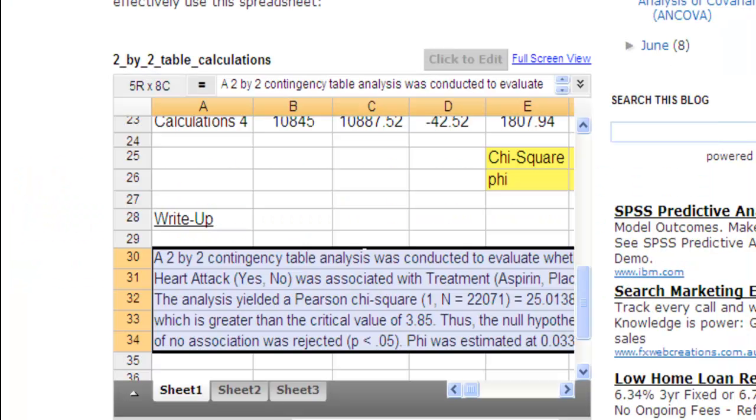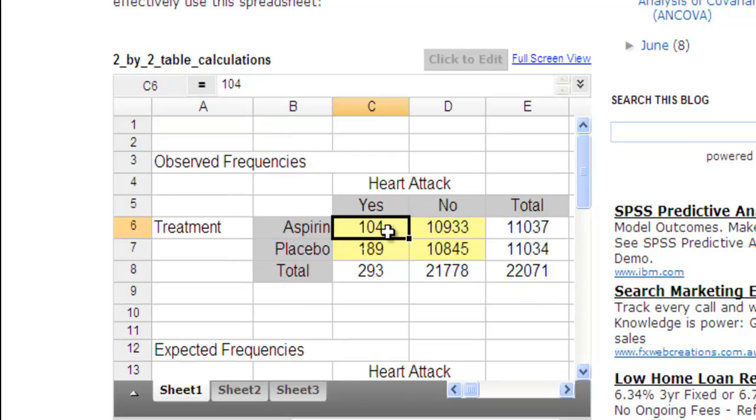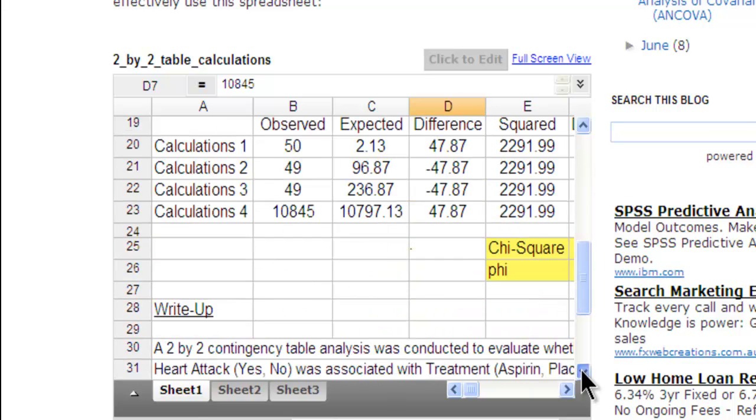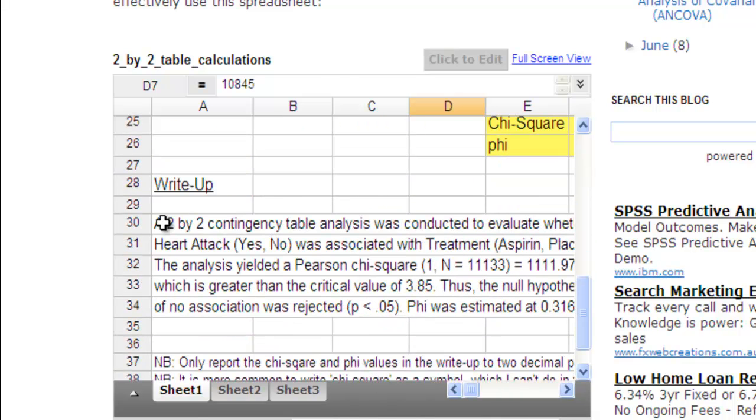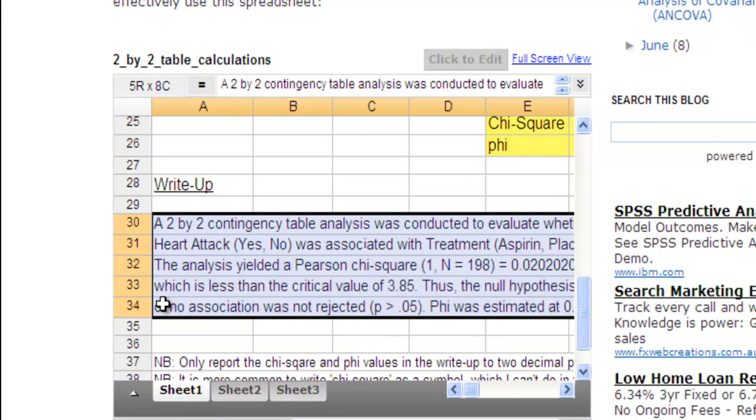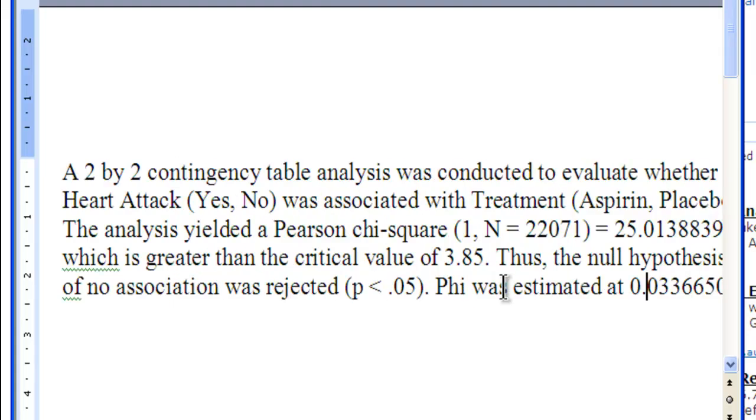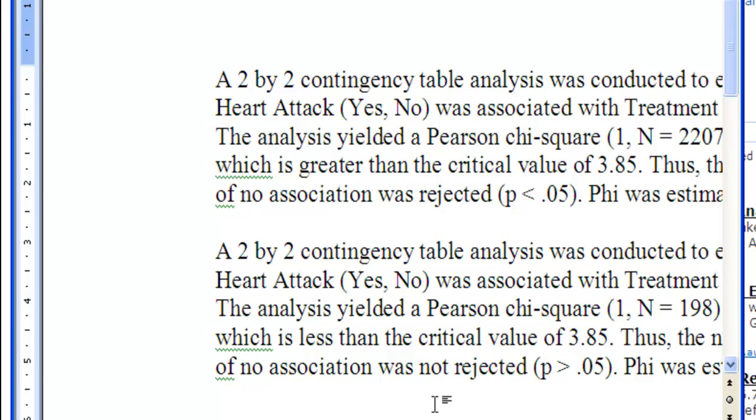So now let's check it out. If I change the numbers to something like 50, 49, and 49, and 50, so all these numbers are going to change. That's all I have to input, and let's just say it was the same analysis, like same variables. So I just copy, put that into the spreadsheet, and the report, the results section is rewritten.